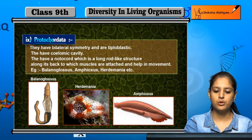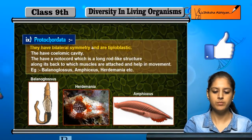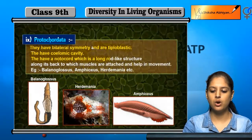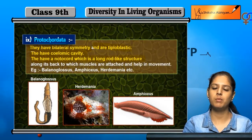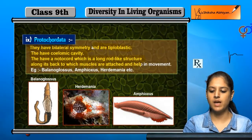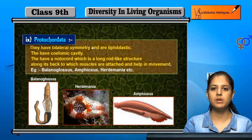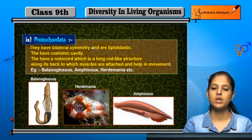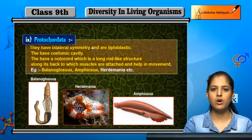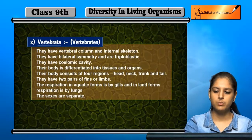Ninth is Protochordata. They have bilateral symmetry and are triploblastic, and they also have a coelomic cavity. They have a notochord, which is a long rod-like structure along their back, to which muscles are attached to help in movement. Examples are Balanoglossus, Amphioxus, and Herdmania.